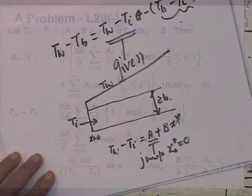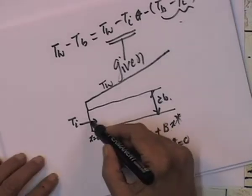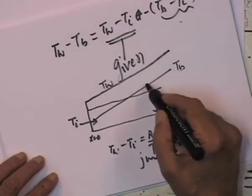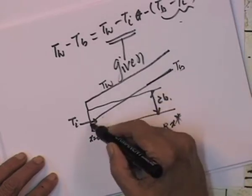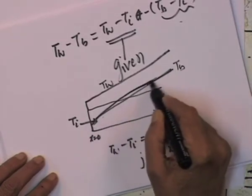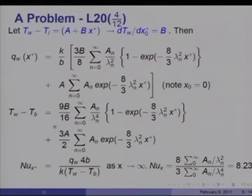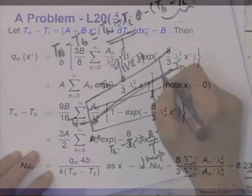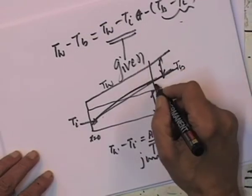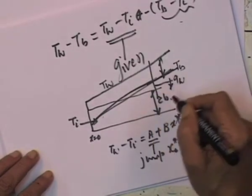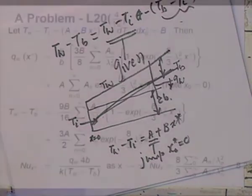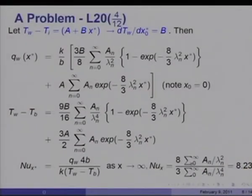What this shows is that the bulk temperature will also vary linearly after a long downstream distance. Although initially it may vary in an arbitrary manner, after a long time T_wall minus T_bulk maintains a constant difference, and therefore from that point onwards it would be a case of constant heat flux at the wall. This gives Nu equal to 8.235, which is the fully developed constant heat flux result. This verifies that the solution appears correct in the infinity state.